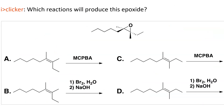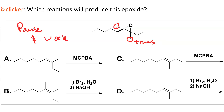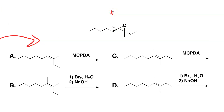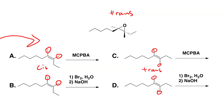Here's an exercise for you. Which reactions are going to produce this epoxide? Note that the epoxide is trans with regards to the methyl groups. Pause and work your video. To get the trans epoxide, whether you use peroxy acid or the bromohydrin route, you have to start from a trans alkene. Choices A and B are cis alkenes — the methyls are cis. Choices C and D are trans, so we need to use choices C and D.